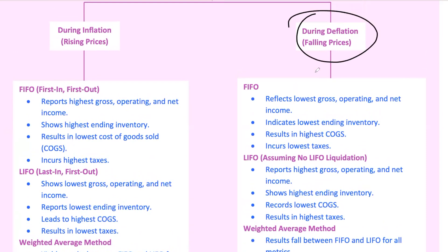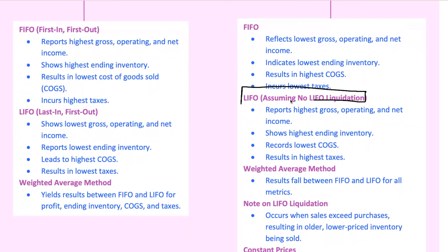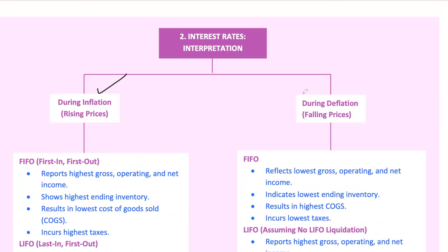During deflation, when prices are falling, the roles reverse. With FIFO, the company now reports the lowest profits because it's selling the older, higher-cost inventory first, leading to higher COGS and lower profits. With LIFO, the company benefits from the opposite effect, reporting the highest profits because it's selling the more recently acquired, lower-cost inventory first. The weighted average method again falls in the middle. The economic environment — whether inflationary or deflationary — can dramatically alter how these inventory methods affect a company's financials, so it's important to understand the context.